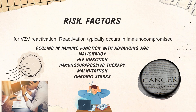What can lead to the immunocompromised state? It could be due to advancing age, malignancy, HIV infection, immunosuppressive therapy, malnutrition, or chronic stress.